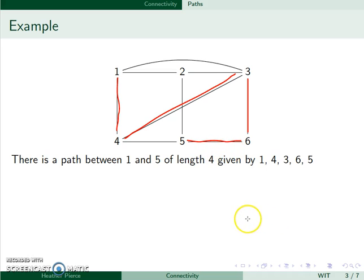It was definitely not the most efficient way to get between 1 and 5, but it is a path. In fact, since we travel down each edge only once, it is a simple path.